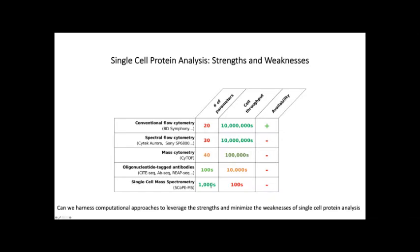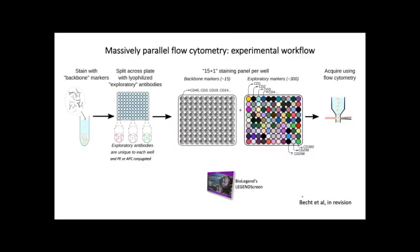What we asked in developing Infinity Flow is: can we leverage the strengths of high parameter analysis, high cell throughput, high accessibility, and low cost — while minimizing the weaknesses — using a computational approach? Infinity Flow was really the brainchild of Etienne Becht and represents a merging of well-established flow cytometry technology implemented in a fairly conventional way with a cutting-edge computational approach using machine learning to pull as much information as possible out of a relatively standard flow cytometry experiment. We call these massively parallel flow cytometry experiments.